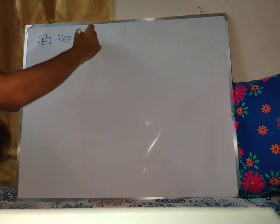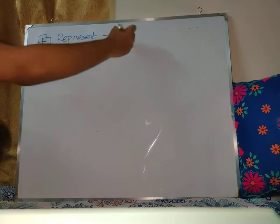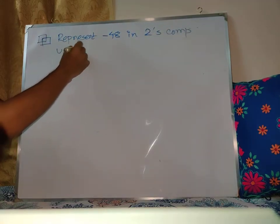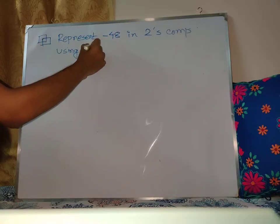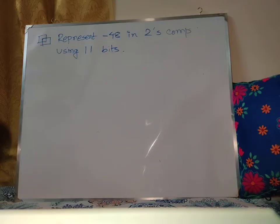Let's move on to another example. Represent minus 48 in two's complement system using 11 bits. So this is the problem: represent minus 48 in two's complement system using 11 bits. Minus 48 is a negative number, and we need to find its two's complement representation.